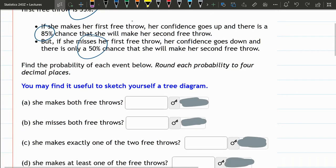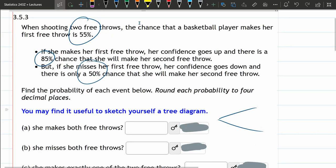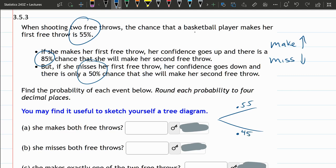So that probability changes. Let's make a tree here. Unfortunately, make and miss both start with M, so for the make I'll use the upper branch, and for the miss I'll use the lower one. The probability she makes her first free throw is .55. Misses is the opposite, 1 minus .55, which is .45.